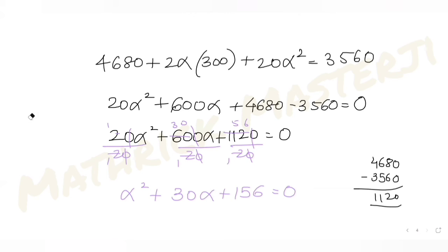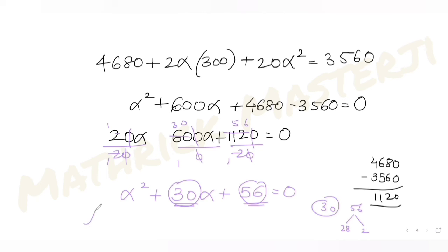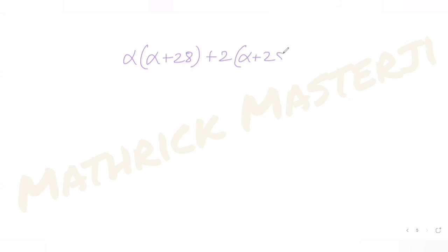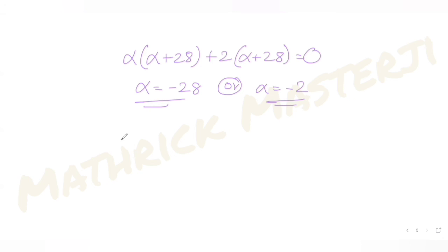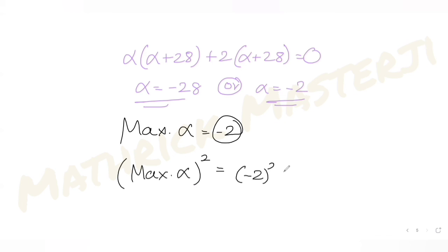So the equation is α² + 30α + 56 = 0. We need two numbers whose sum is 30 and product is 56. That's 28 and 2: α² + 28α + 2α + 56 = 0. Factoring: α(α + 28) + 2(α + 28) = 0, giving (α + 2)(α + 28) = 0. So α = −2 or α = −28. The maximum value of alpha is −2.